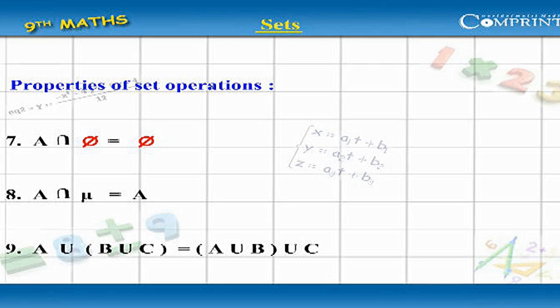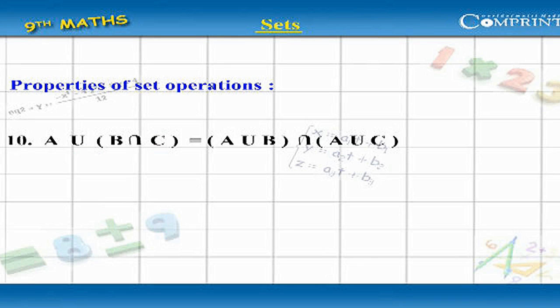A union B union C equal to A union (B union C). A union (B intersection C) equal to (A union B) intersection (A union C).